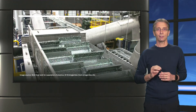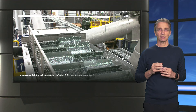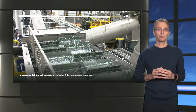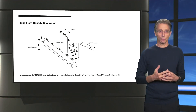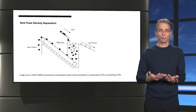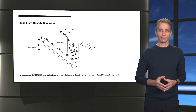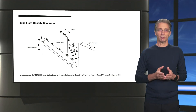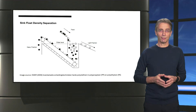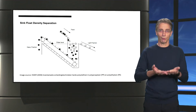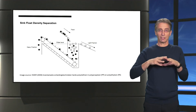An example of a method that uses differences in material properties is sink-float density separation. In this method, mixed polymer waste is introduced into a flotation bath filled with water or another liquid. Because of the different densities, lighter polymers such as polypropylene and polyethylene will float and can thus be collected from the surface.